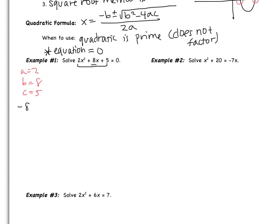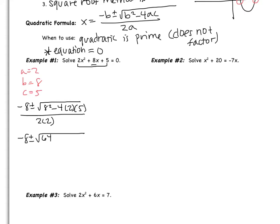The opposite of b is going to be negative 8, plus or minus the square root of 8 squared minus 4, times a which is 2, times c which is 5, all over 2a which is 2 times 2. Simplifying, I get negative 8 plus or minus the square root of 64 minus 40, all over 4, which is negative 8 plus or minus root 24 over 4. I'm not finished — I need to simplify this. I can't just divide everything by 4 because the 24 is under the root, so I need to simplify that first.